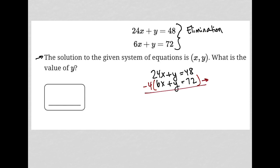Because in doing so, I end up with negative 24x minus 4y equals negative 72 times 4, negative 288. That first equation would stay the same at 24x plus y equals 48.